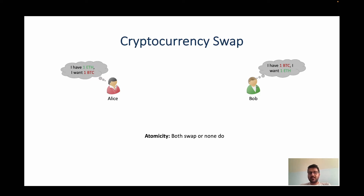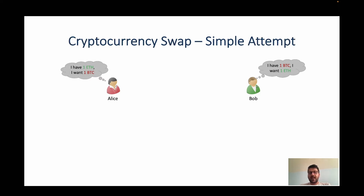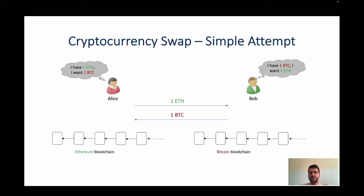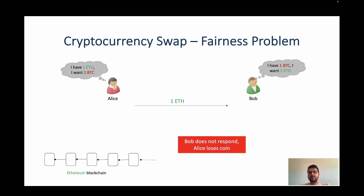A simple attempt would be the following: Alice transfers her Ether to Bob in the Ethereum blockchain and Bob transfers his Bitcoin in the Bitcoin blockchain separately. Neither party can be trusted here. Therefore, a malicious Bob may abscond away with the coins from Alice and not pay her in Bitcoin. In other words, the solution does not guarantee atomicity.